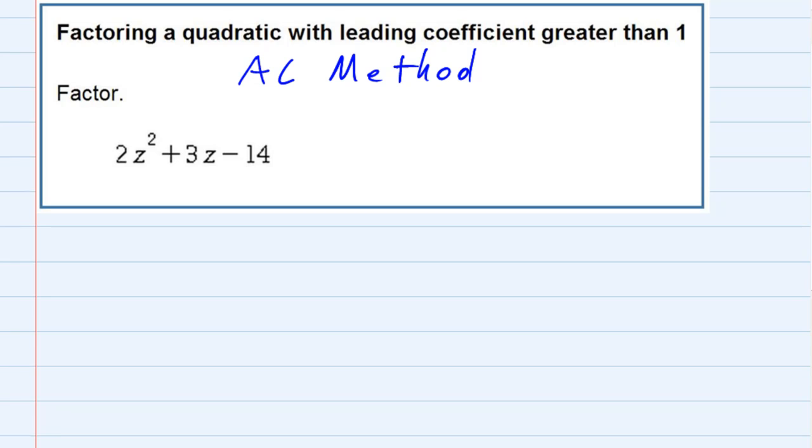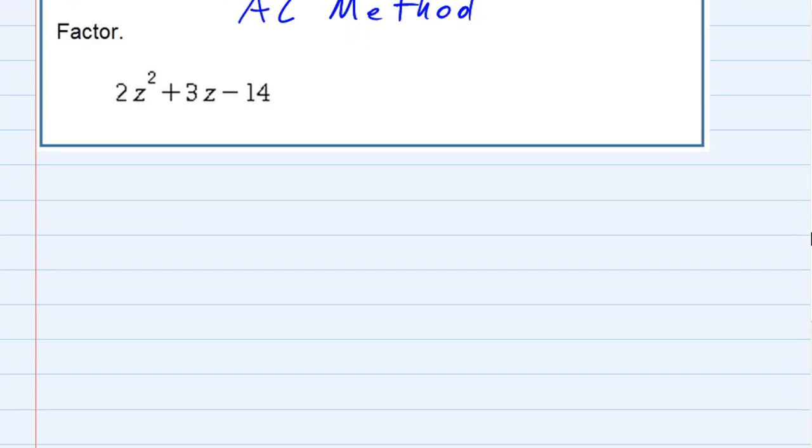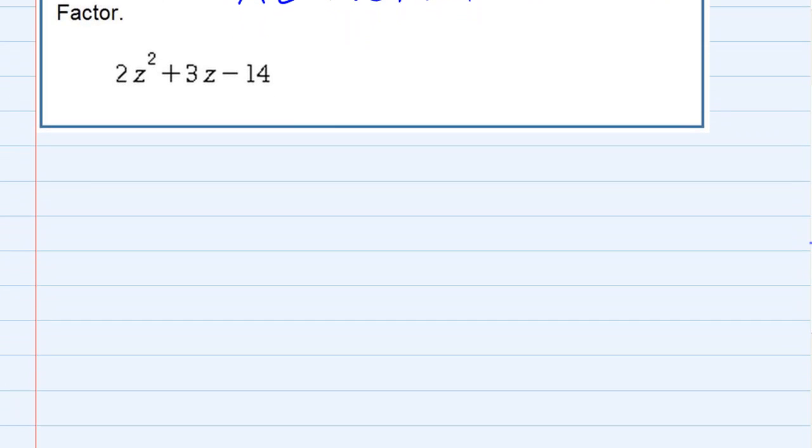We have our quadratic here that we're asked to factor. Even though we would try to factor out the greatest common factor from each of those three terms, there isn't one. So we are left with a leading coefficient greater than 1. It is written already in descending order, so it's in the form of AX² plus BX plus C.